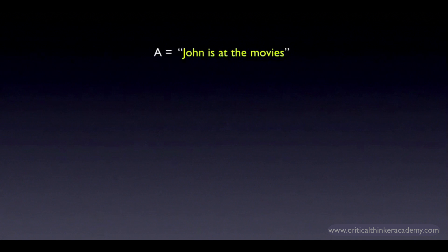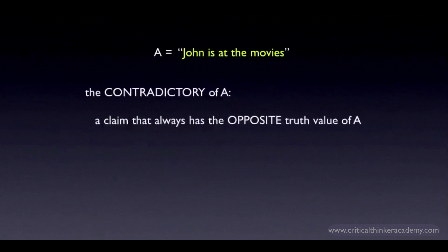Let A be the claim: John is at the movies. The contradictory of A is defined as a claim that always has the opposite truth value of A. So whenever A is true, the contradictory of A is false. Whenever A is false, the contradictory of A is true.